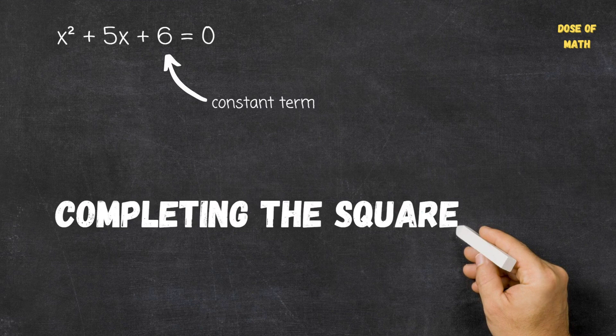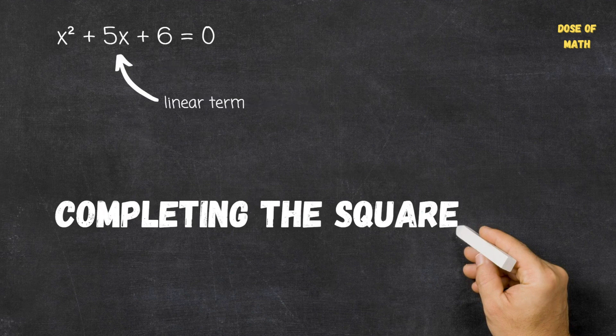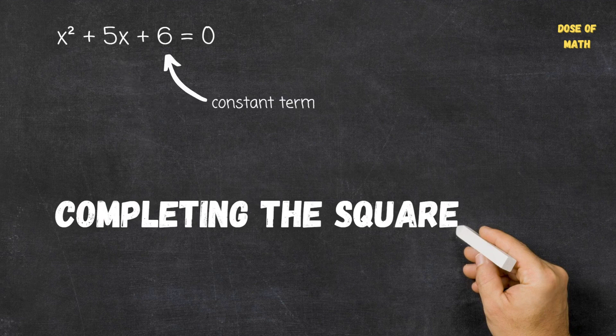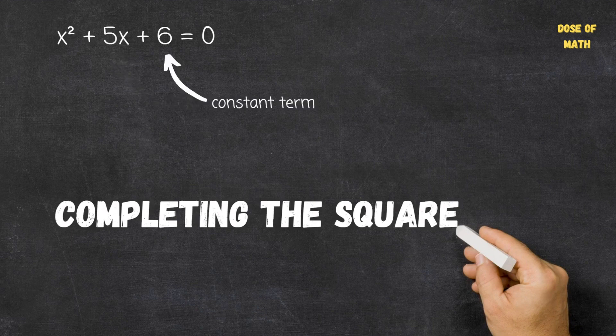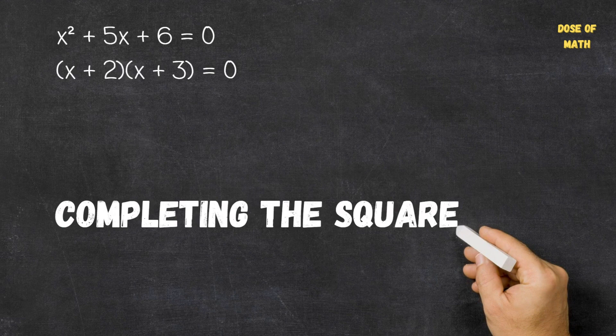So in order to solve this using factorization, we need to have two factors of the constant term that will sum together to give us the coefficient of the linear term. We can quickly see here that the factors of 6 are 1 and 6, and 2 and 3. So 2 and 3 will indeed sum together to give us the coefficient of the linear term, which is 5. So we can construct the factors: x plus 2 multiplied by x plus 3 equals 0.